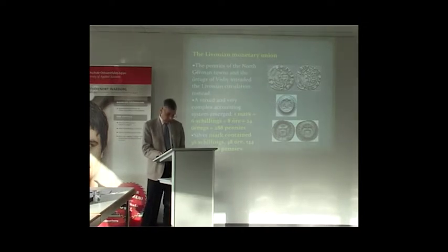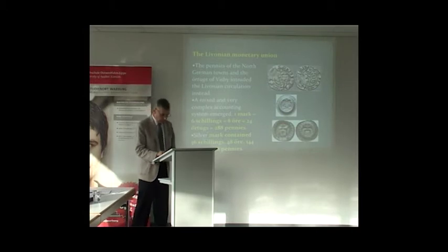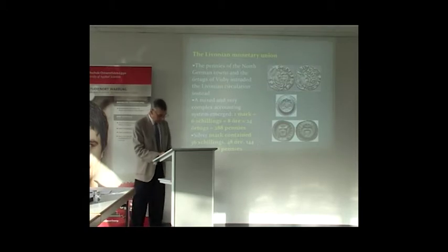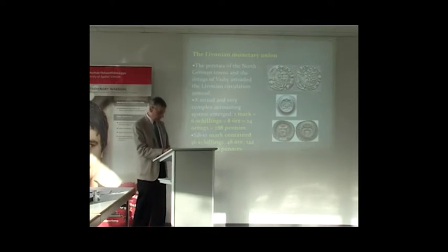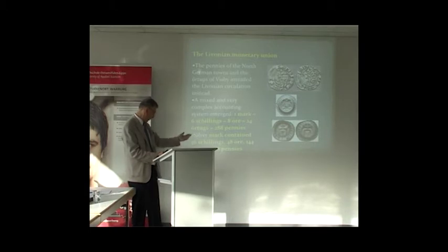A mixed and very complex accounting system emerged. One mark coins, also equal to six shillings, 8 öre, 24 örtug, 288 pennies. Consequently, as we learned before, a silver mark contained six times more, so it contains six times more of every denomination, also 36 shillings, and you can read it here.